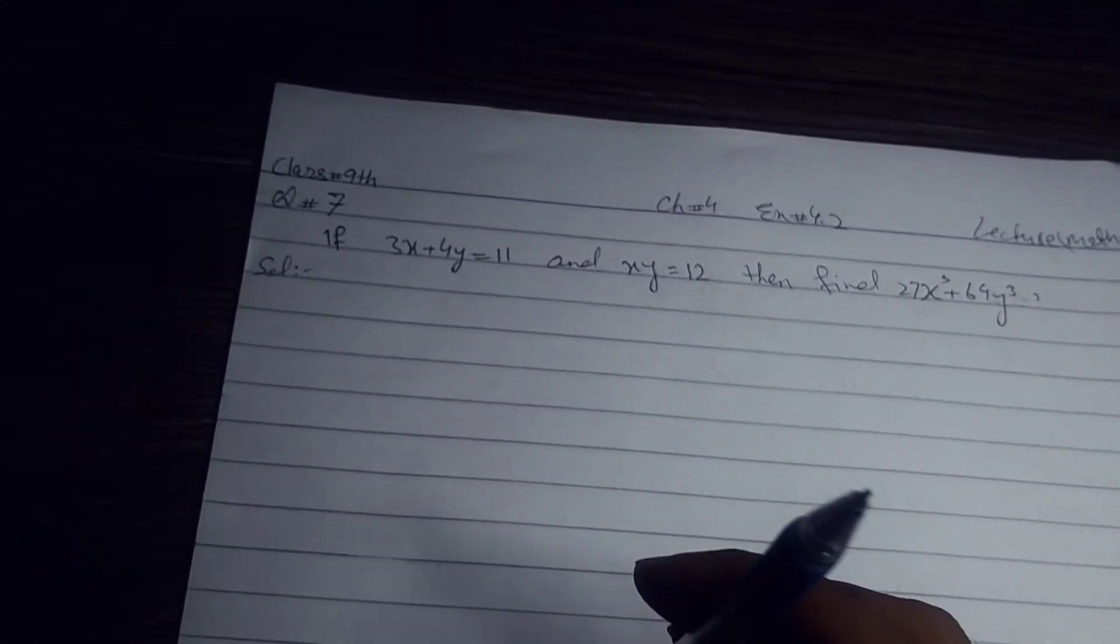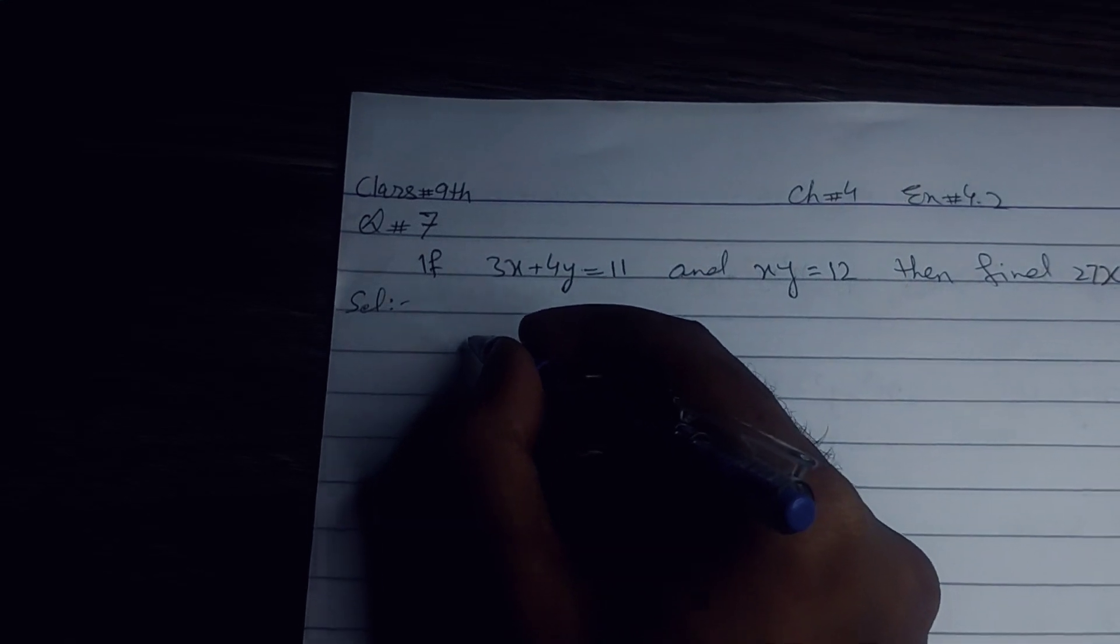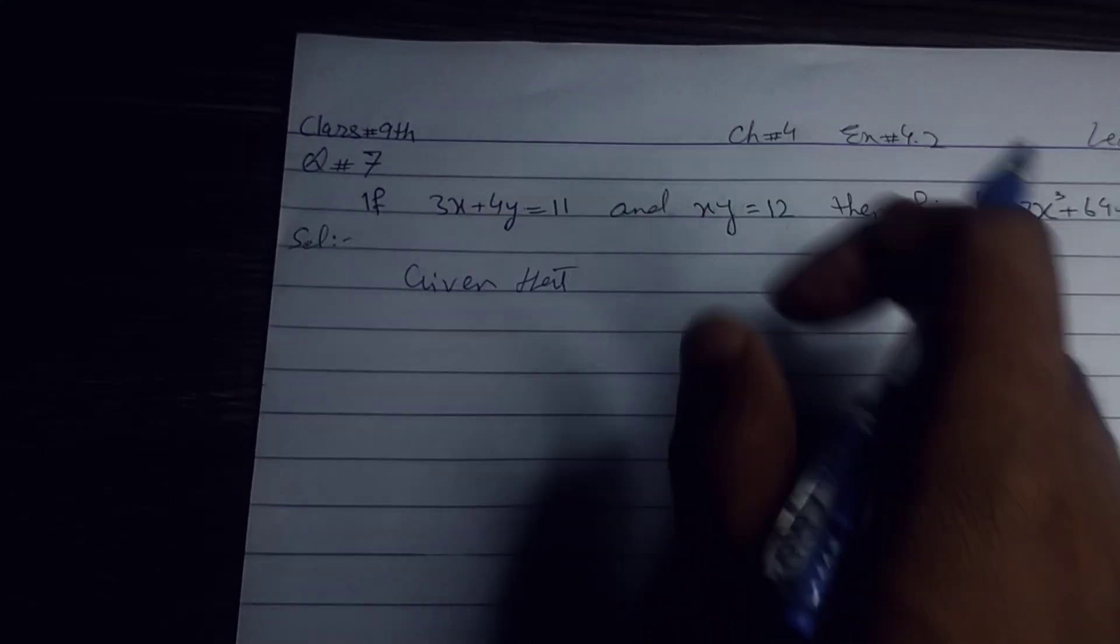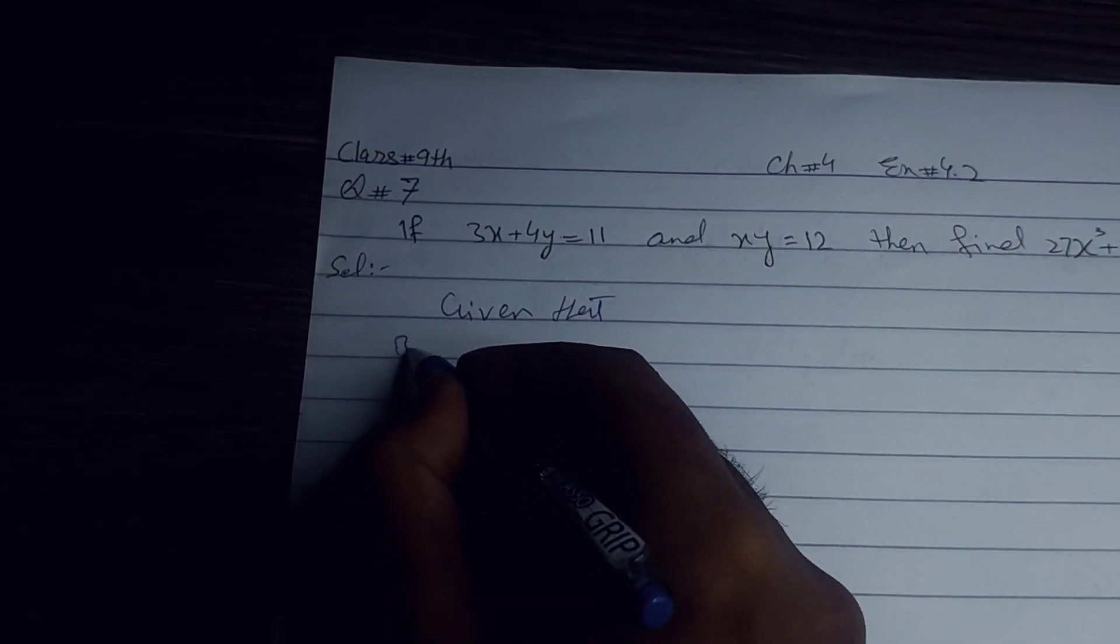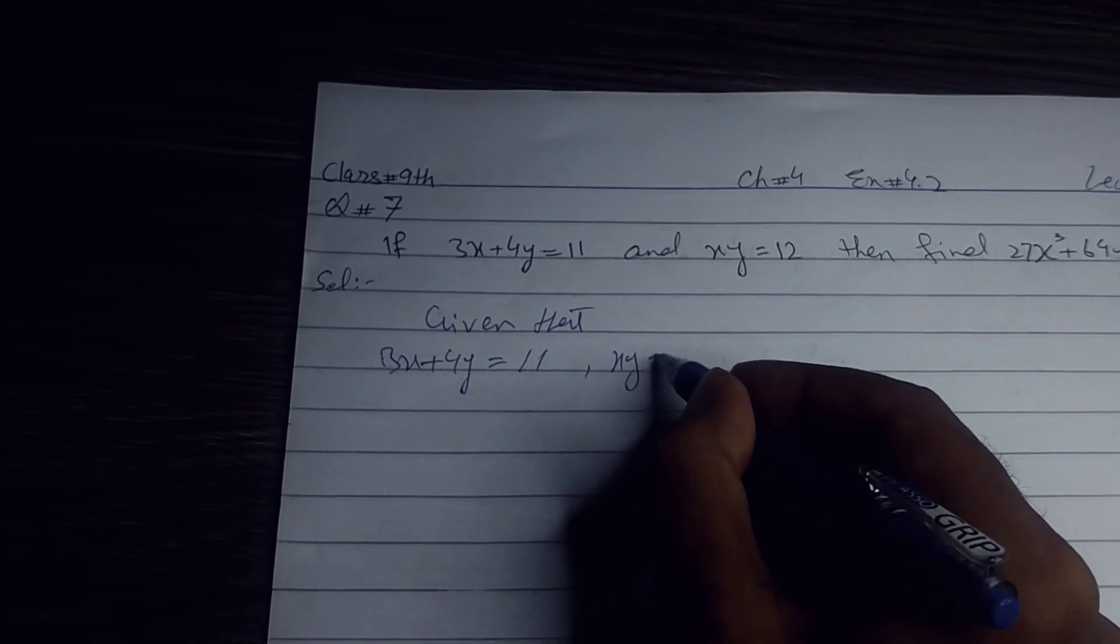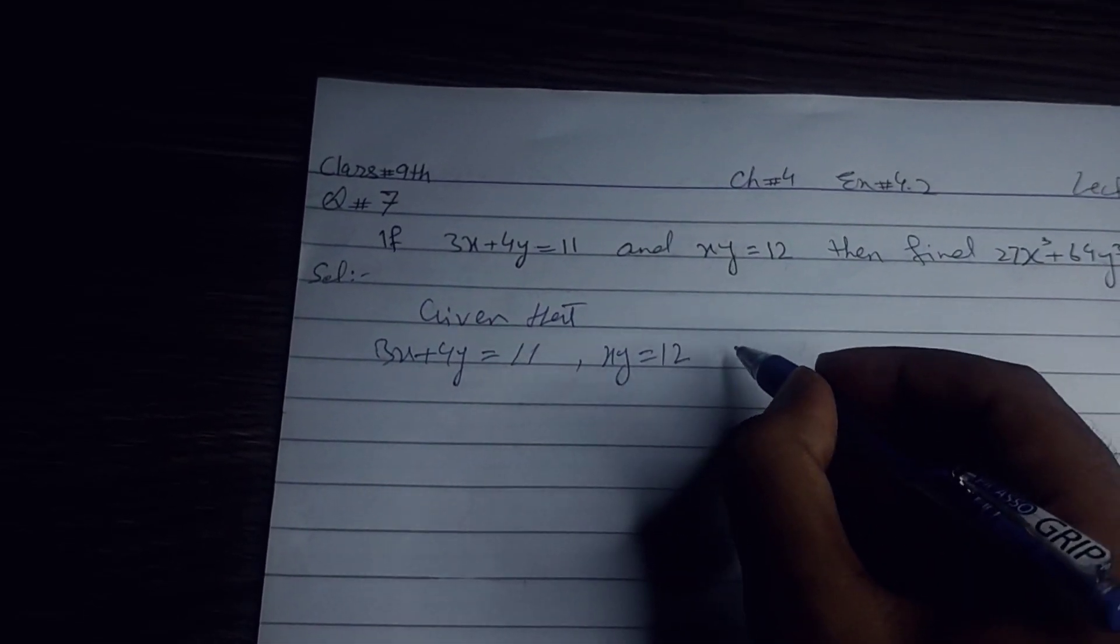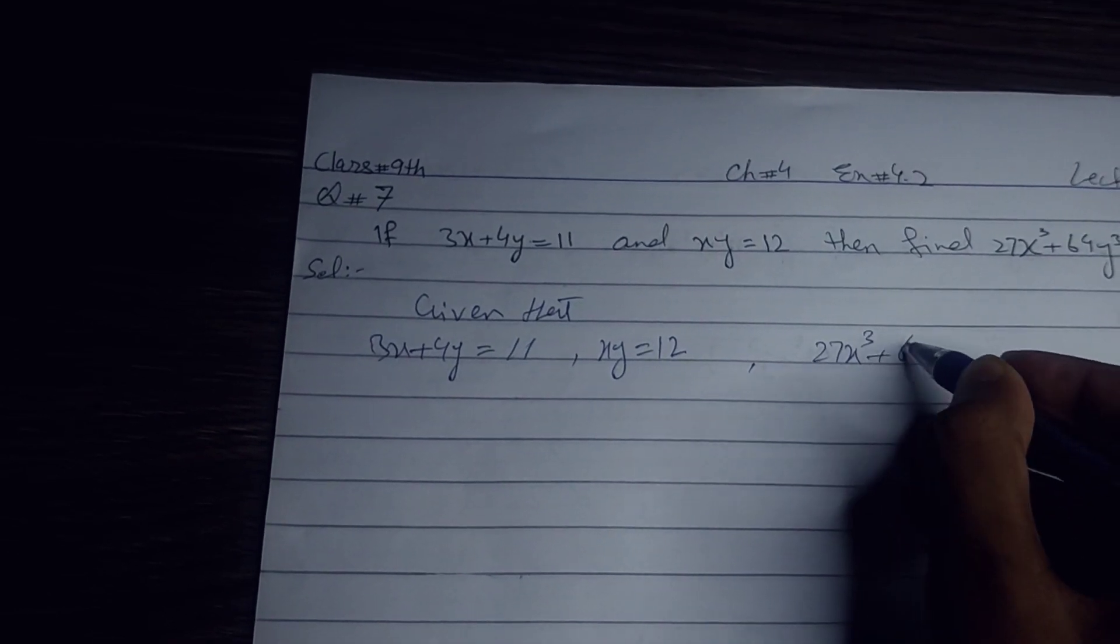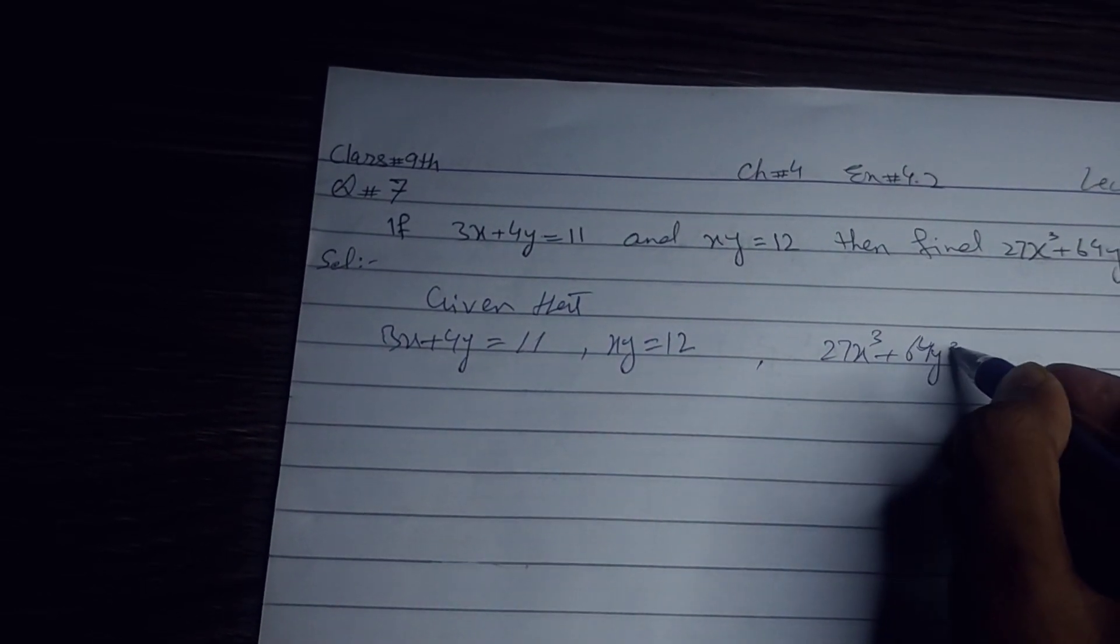Chaliye, given that 3x plus 4y equals 11, xy equals 12. We need to find 27x³ plus 64y³.